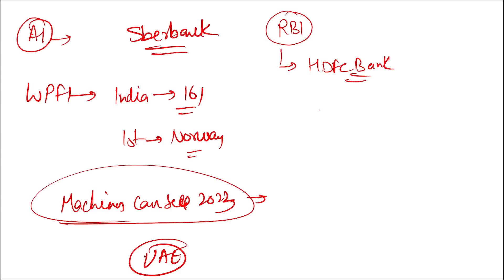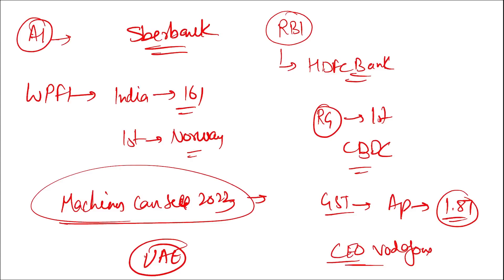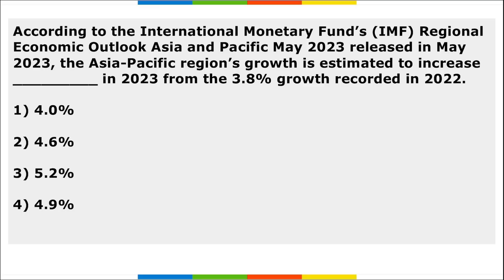Reliance General became the first insurer to accept the central bank digital currency — the E-Rupee. The GST collection for April was the highest ever at 1.87 lakh crore rupees. Margherita Della Valle was appointed as the first permanent CEO of Vodafone. Ajit Kumar Mohanty was appointed as the chairman of the Atomic Energy Commission.